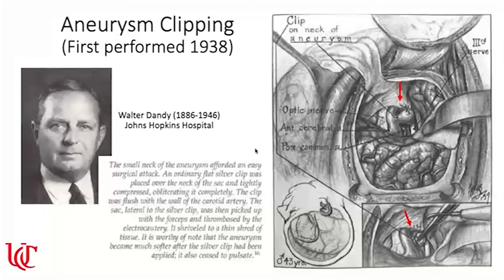Dandy described that the small neck of the aneurysm afforded an easy surgical attack. An ordinary flat silver clip was placed over the neck of the sac and tightly compressed, flush with the wall of the artery. Once the aneurysm clotted off, it shriveled to a thin shred of tissue, became softer, and ceased to pulsate. Essentially, the aneurysm was blocked off from the cerebrovascular circulation, preventing it from rupturing again.